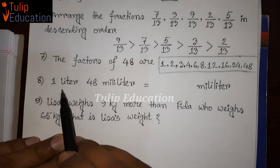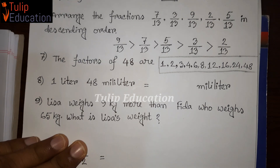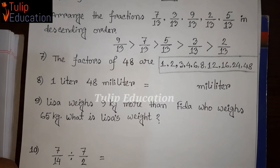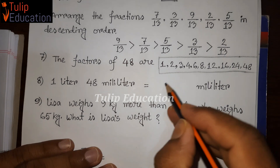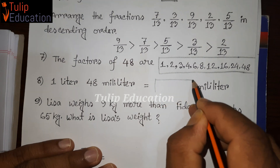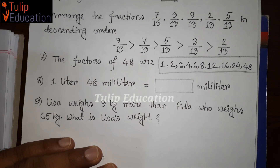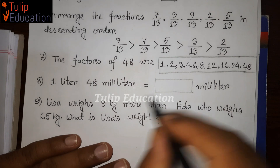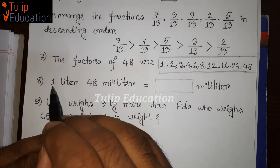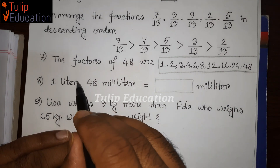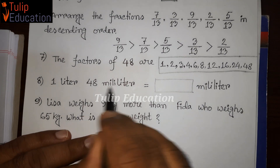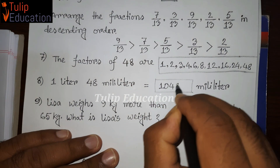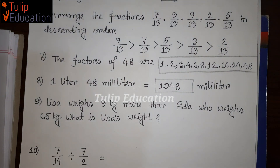Question number 8: 1 liter 48 ml equals how many ml? We know that 1 liter is 1000 ml. So 1000 ml plus 48 ml gives us a result of 1048 ml.